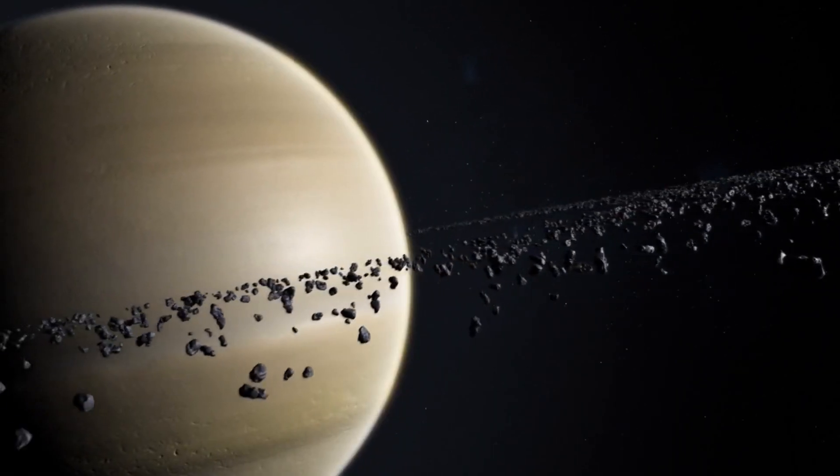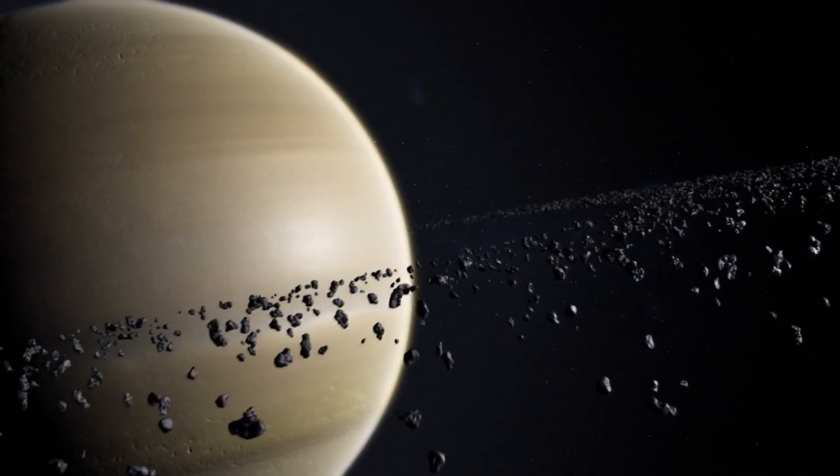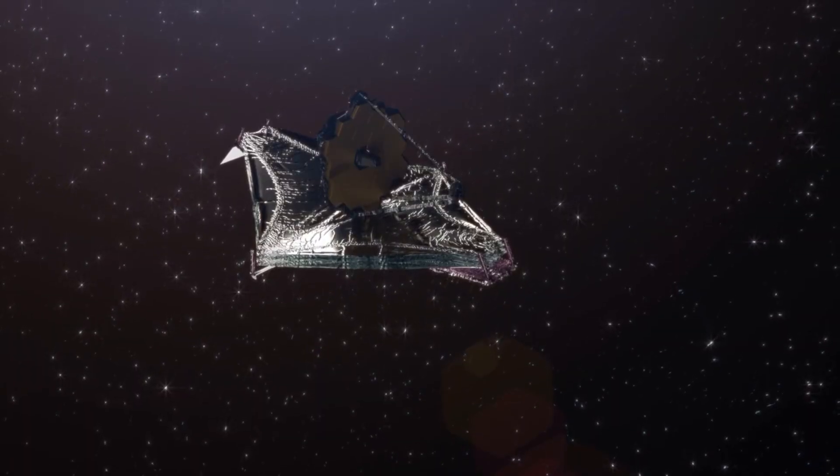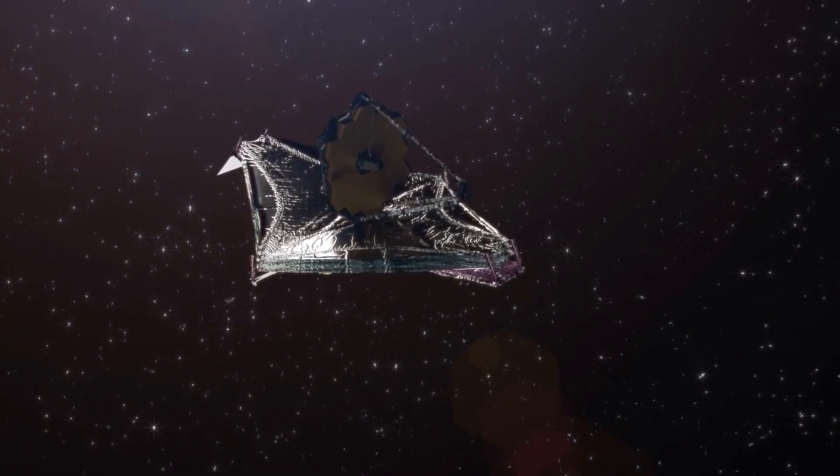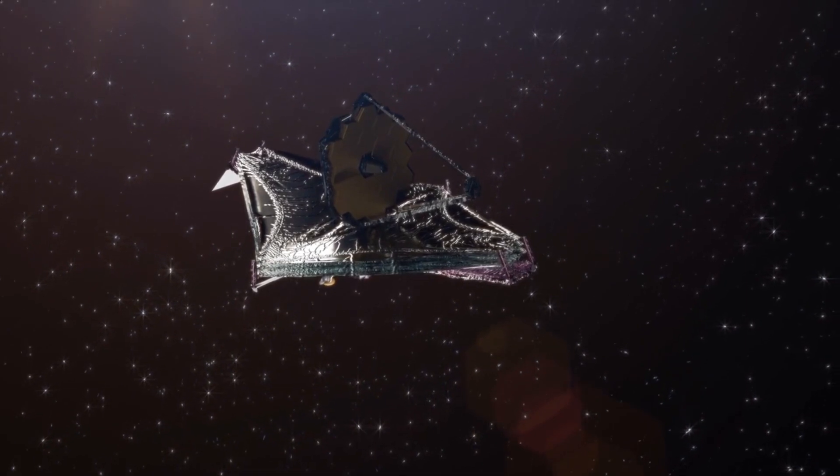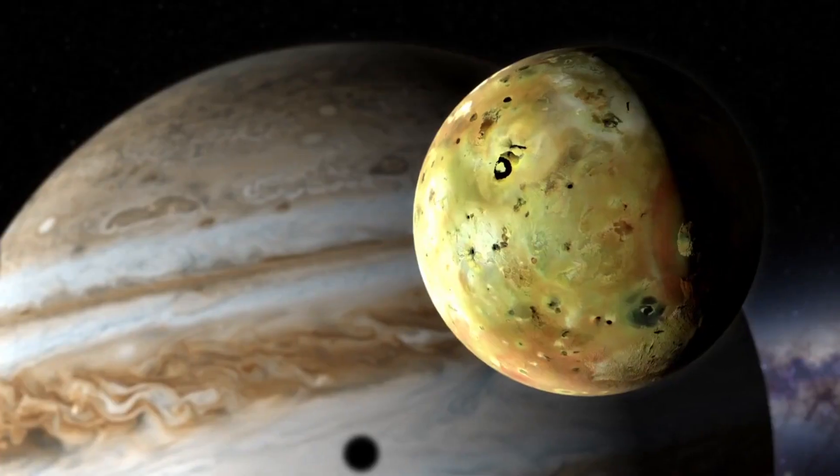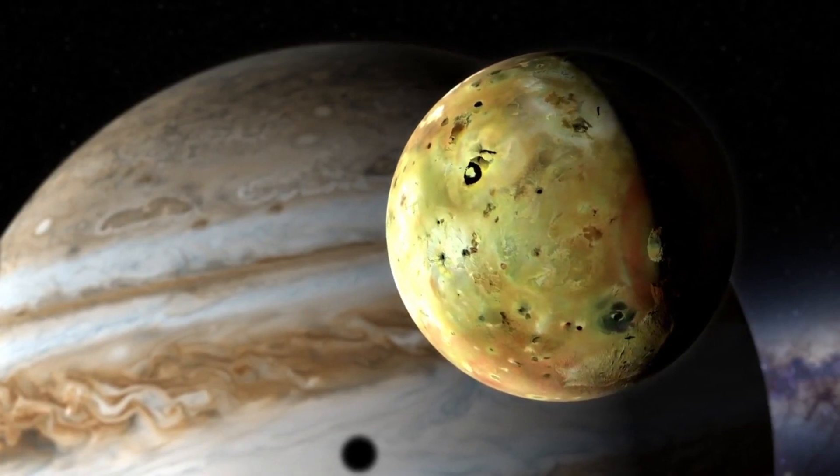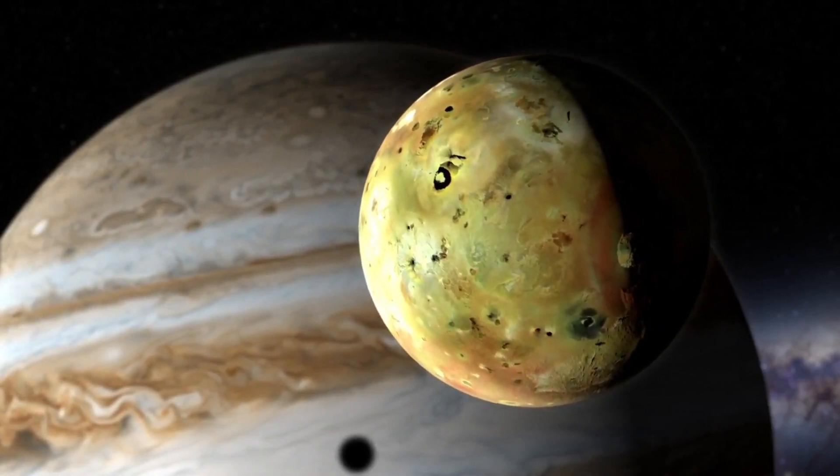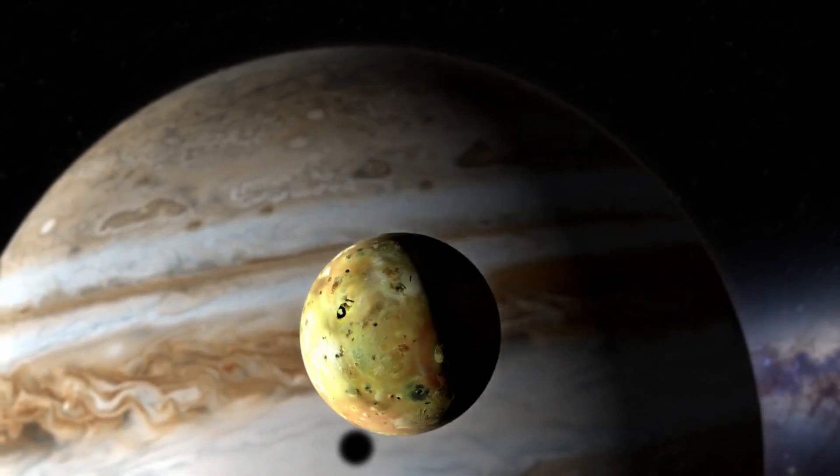Since then, over 700 other planetary systems have been discovered, and in 2022 the James Webb Space Telescope was also able to capture the first direct image of a planet outside of our own solar system. Scientists now estimate that there may be as many as 100 billion solar systems in our own Milky Way alone.